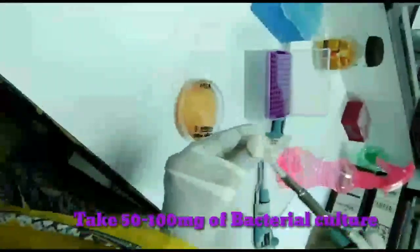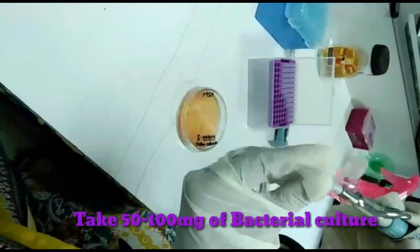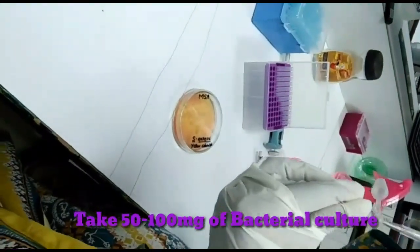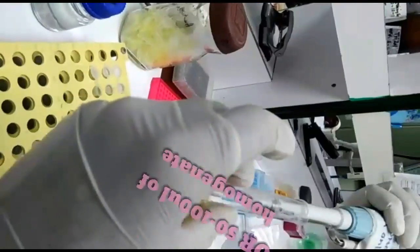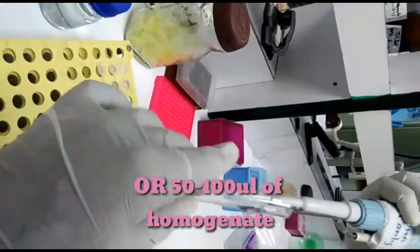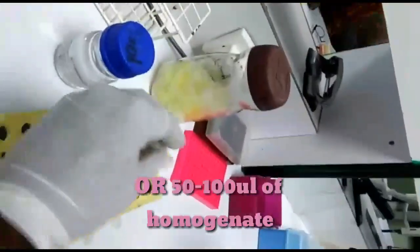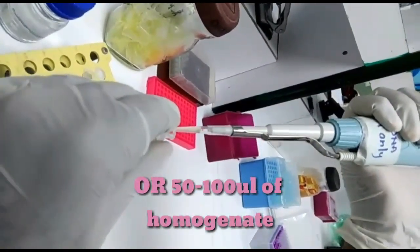Take 50 to 100 mg of bacterial culture in an eppendorf, as well as 50 to 100 microliters of bacterial homogenate in a sterile eppendorf.